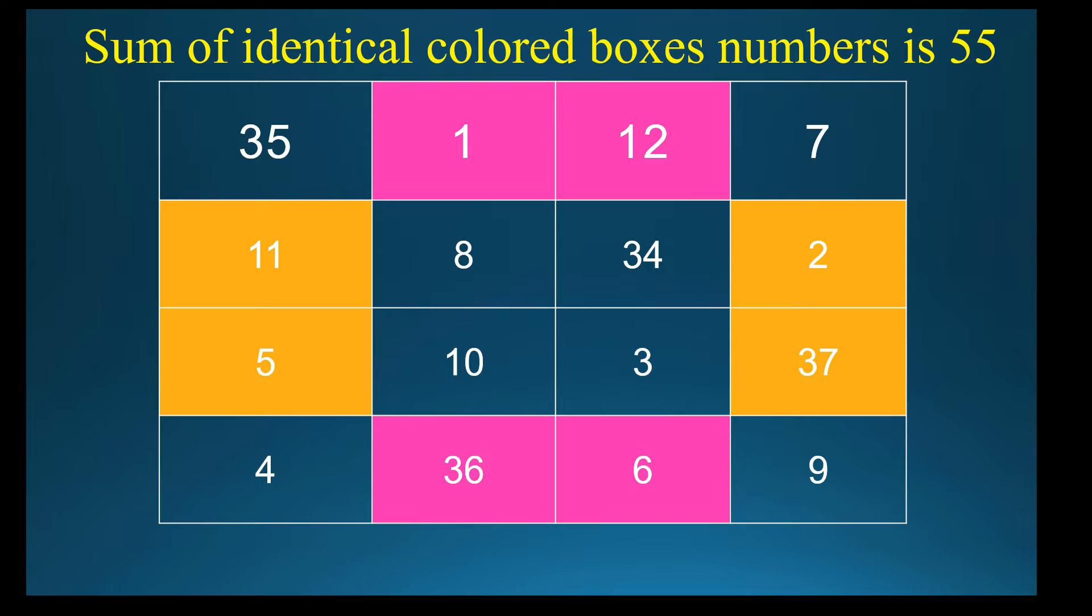Now you take identical colored boxes. So pink color boxes: 1, 12, 36, 6. Add. You will get 55.